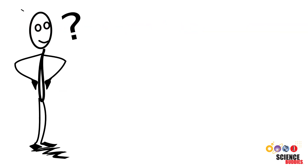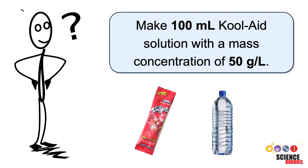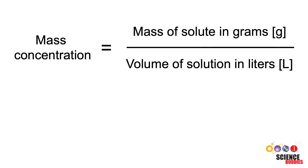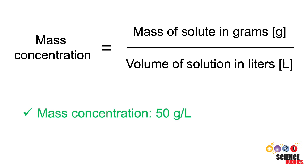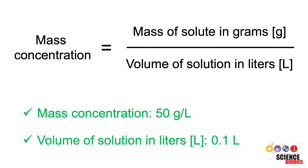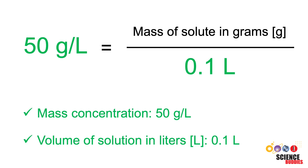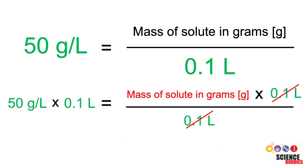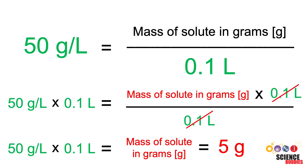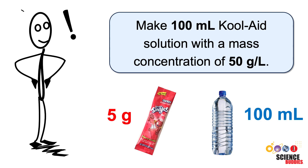So how do we make solutions with specific concentrations? Let's say we needed to make a 100 milliliter kool-aid solution with a mass concentration of 50 grams per liter. We can use the mass concentration equation to determine how to prepare the solution. We know the mass concentration needs to be 50 grams per liter, and we want 100 milliliters or 0.1 liters of the solution. We put these numbers into the equation and solve for the mass of the solute in grams. The result is 5 grams. We now know that we must dissolve 5 grams of kool-aid into 100 milliliters of water to make 100 milliliters of a kool-aid solution with a mass concentration of 50 grams per liter.